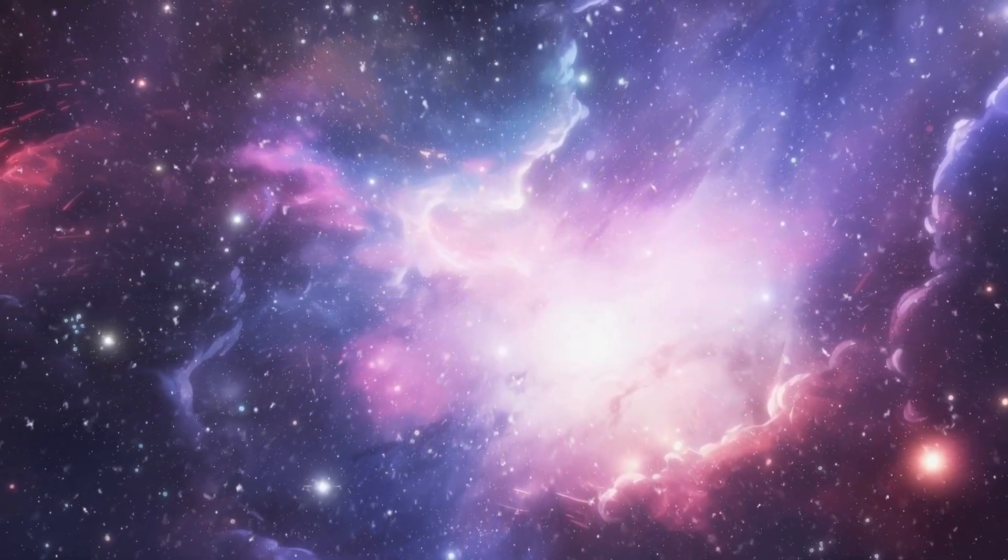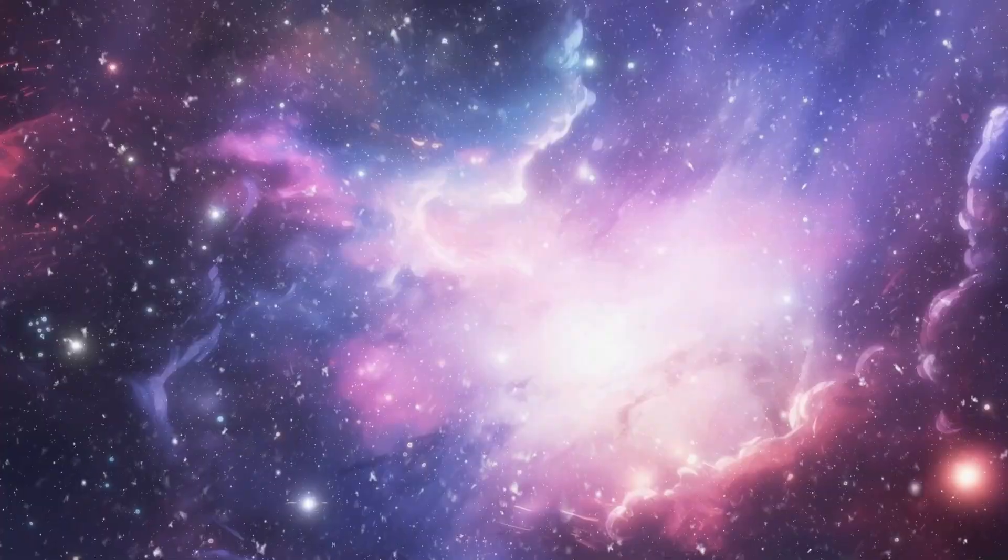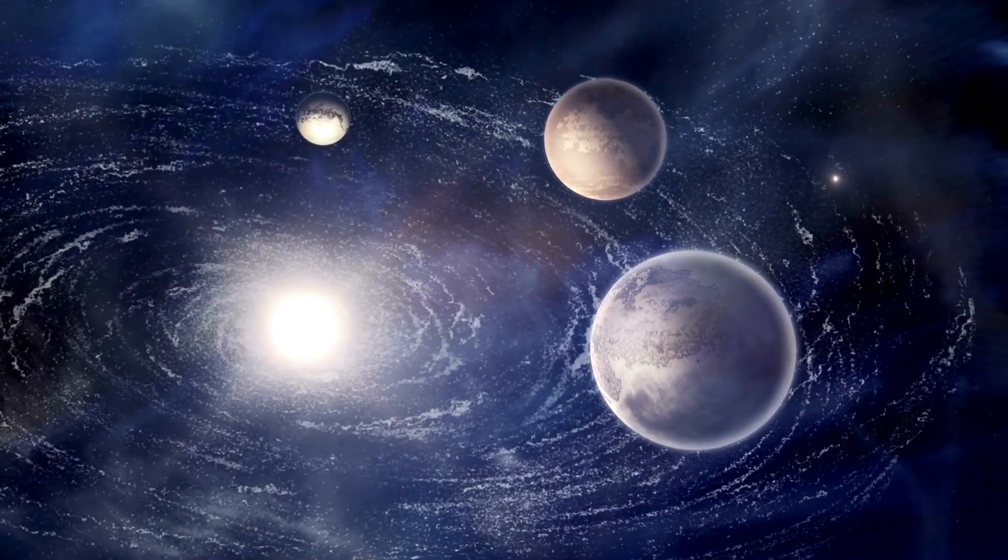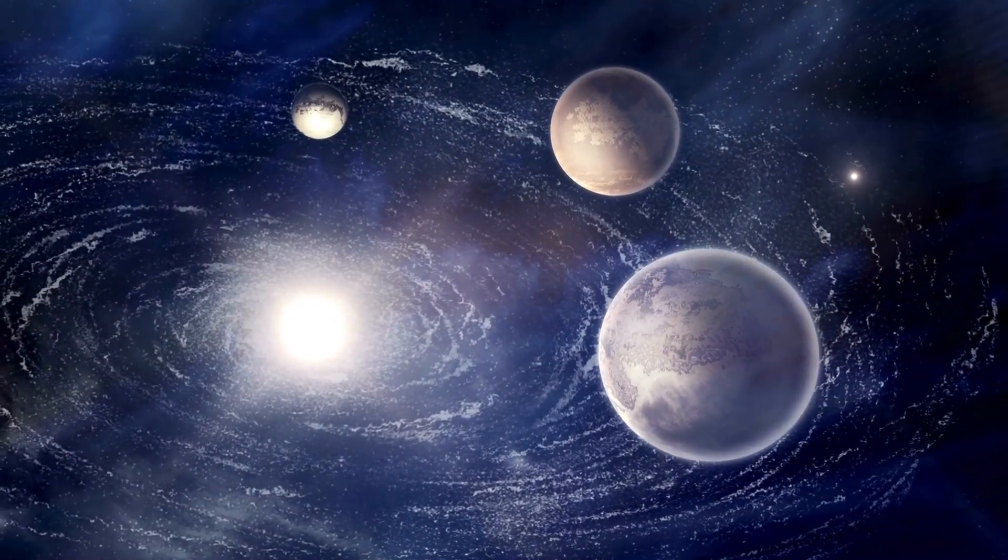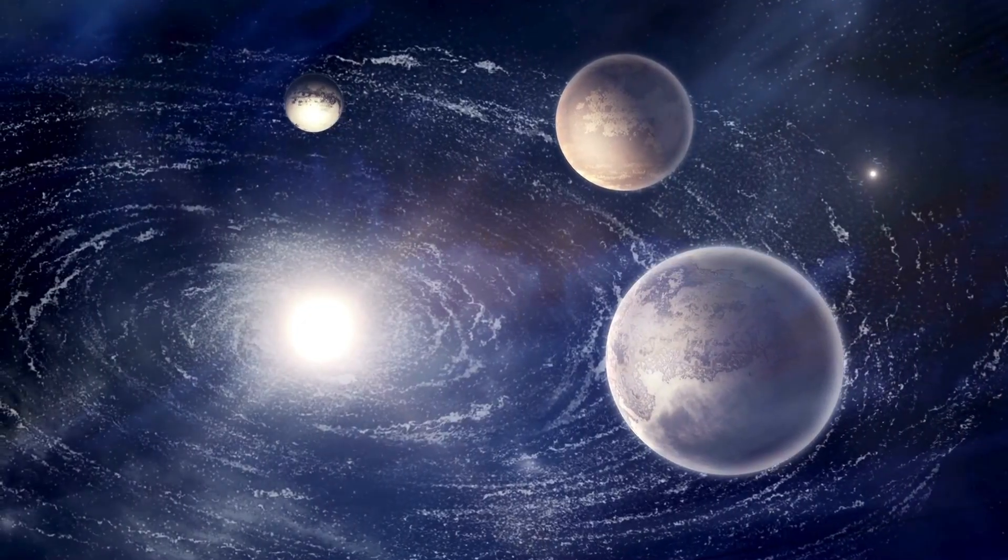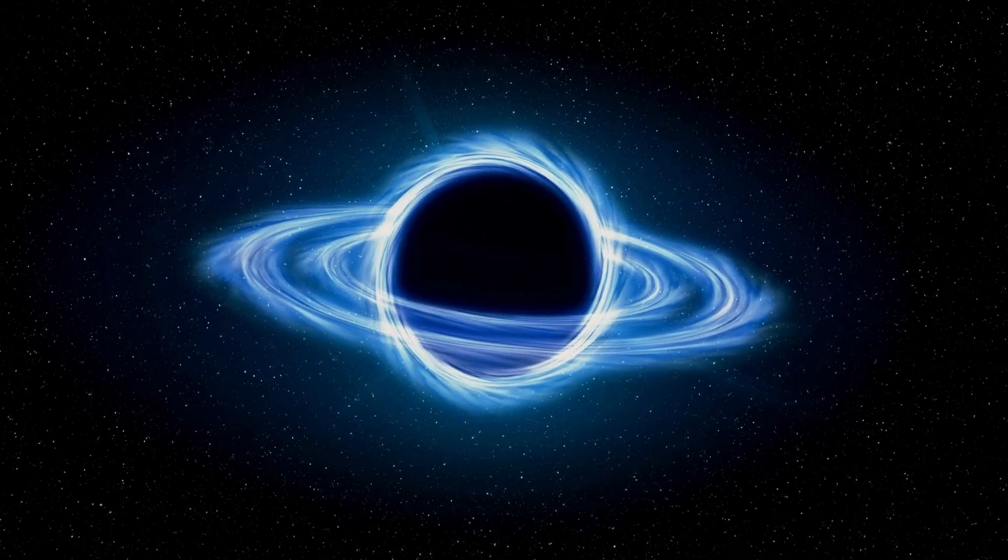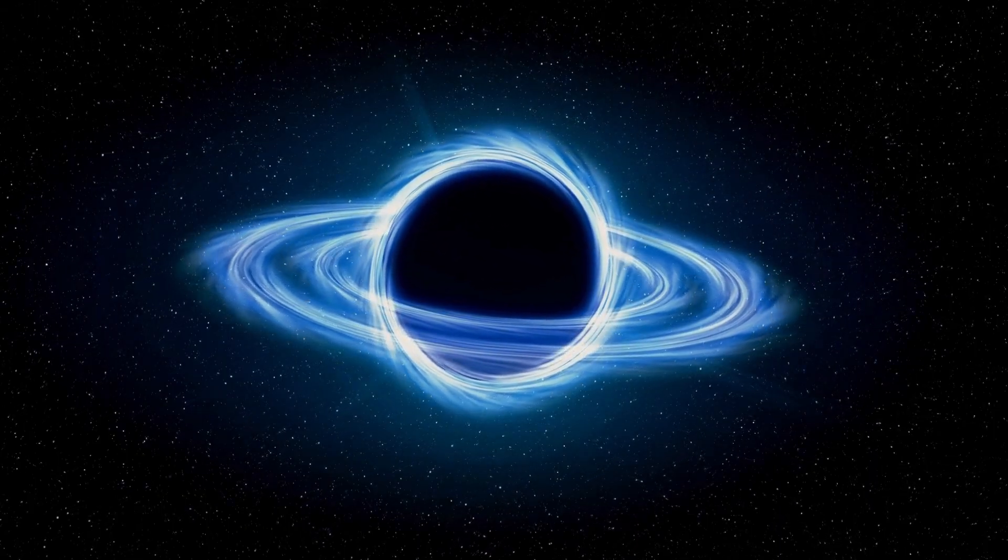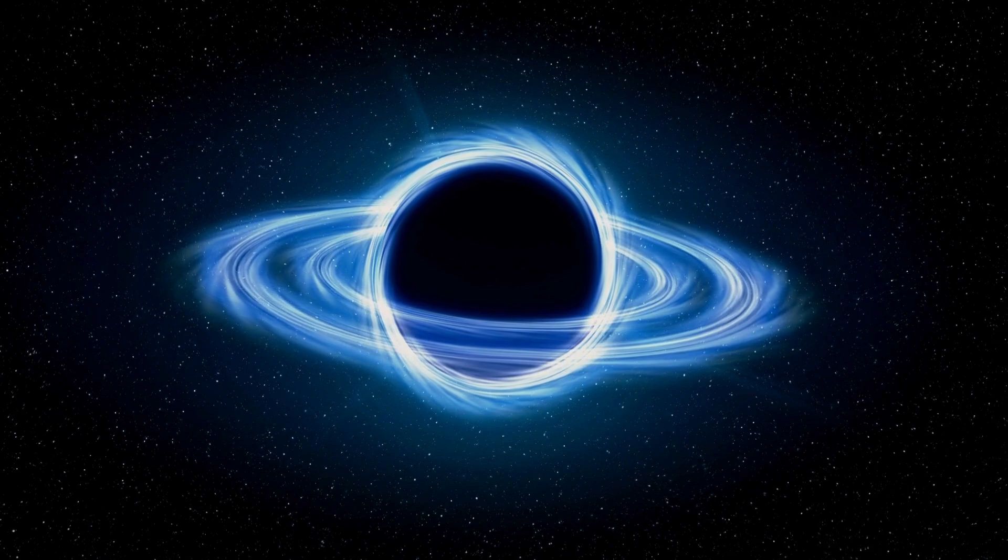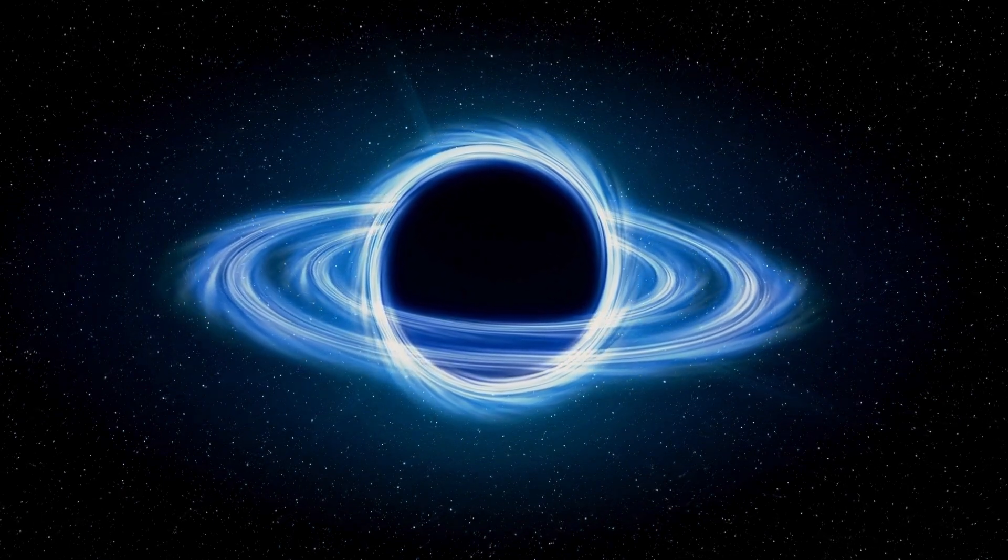Nestled in the constellation of Orion, Betelgeuse is a red supergiant star, massive and ancient beyond our comprehension. It has long been known for its unique reddish glow and its fluctuating brightness. But recent observations have sparked intense interest, especially with the discovery of dramatic shifts in its behavior. At approximately 764 times the size of our sun, Betelgeuse is an absolute giant of a star.